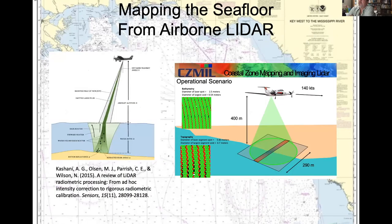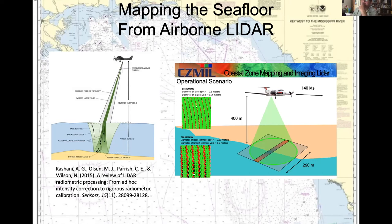Airborne lidar is another commonly used method for seafloor mapping. An aircraft uses a laser to measure the distance to the sea surface and the distance to the seafloor; subtracting the two gives water depth. This measurement also requires that the water level relative to chart datum be known, using traditional tidal zoning to correct the raw sounding to a sounding with respect to chart datum.